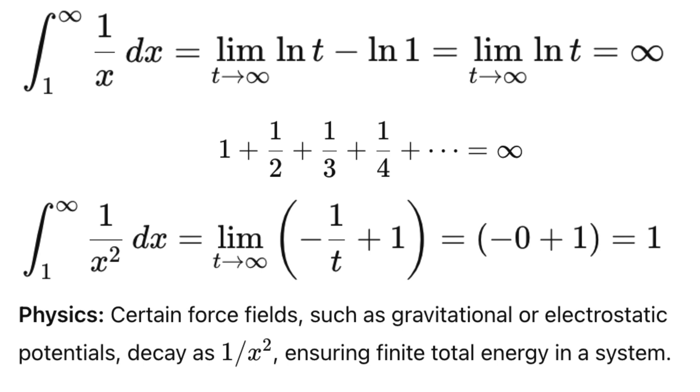Let's look at the implications of these two functions. Getting the area under y equals 1 over x is similar to getting the sum of the harmonic series. We can find a similar problem of getting the area under y equals 1 over x squared in physics. Certain force fields, such as gravitational or electrostatic potentials, decay proportional to 1 over x squared.